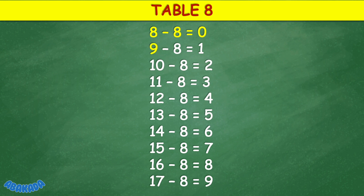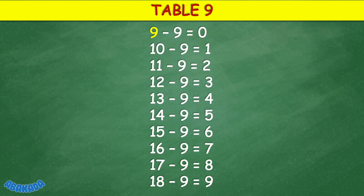Table 8: 8 minus 8 equals 0, 9 minus 8 equals 1, 10 minus 8 equals 2, 11 minus 8 equals 3, 12 minus 8 equals 4, 13 minus 8 equals 5, 14 minus 8 equals 6, 15 minus 8 equals 7, 16 minus 8 equals 8, 17 minus 8 equals 9.